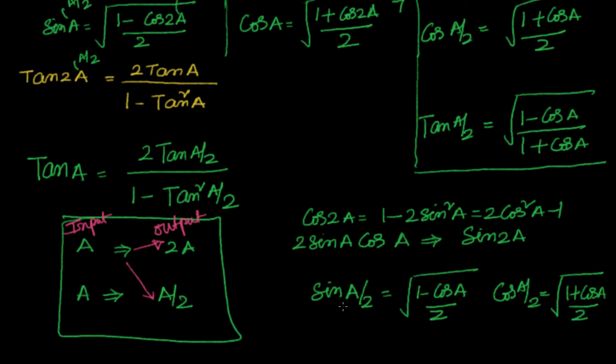Similarly, if I know A, I can find out sin(a/2) using sin(a/2) = √((1 − cos a)/2). When I know a, I know sin a and cos a.